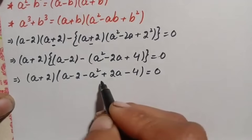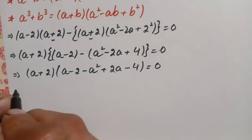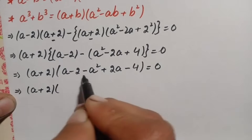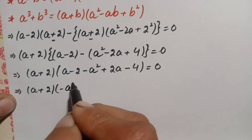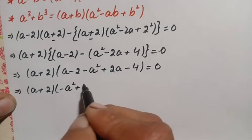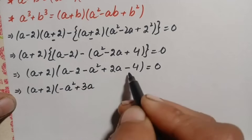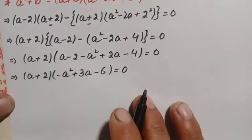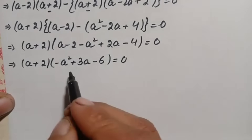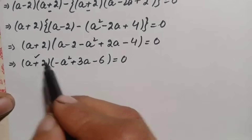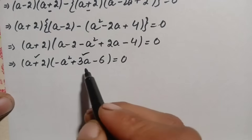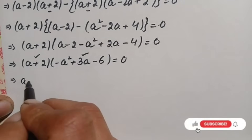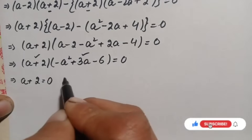Simplifying and rearranging the terms, the equation becomes a plus 2 times negative a squared plus 3a minus 6 equals zero. Since the product of these two expressions is zero, either a plus 2 equals zero or negative a squared plus 3a minus 6 equals zero.